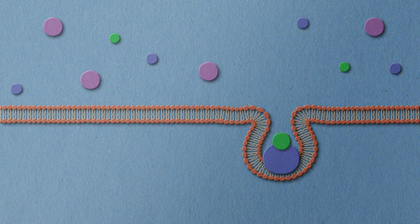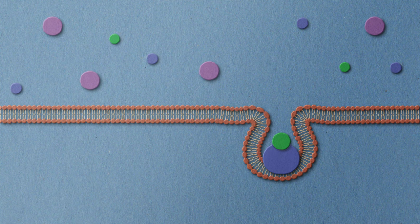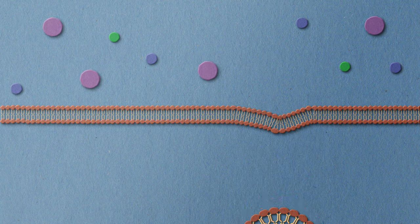The molecules bound to these receptors are taken into the cell through inward budding of the cell surface membrane, which turns into a vesicle within the cell.